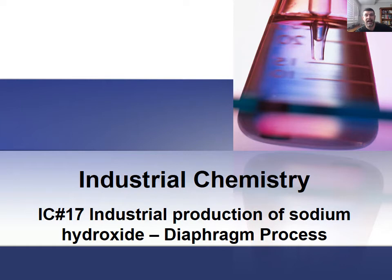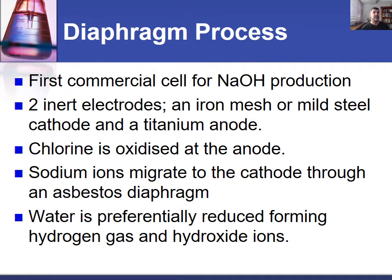Hi students, welcome to HSC Chemistry and the Industrial Chemistry topic. We're going to have a look at video number 17, the second of the three processes used for the production of sodium hydroxide. The context of this is the electrolysis of sodium chloride to produce sodium hydroxide as a commercial industrial product.